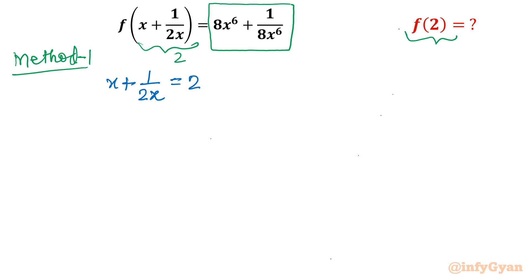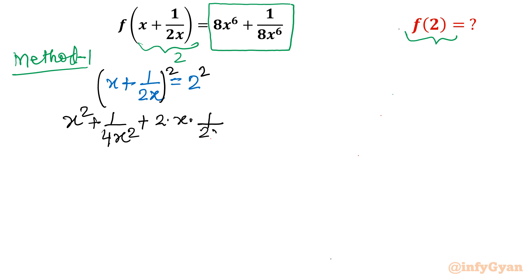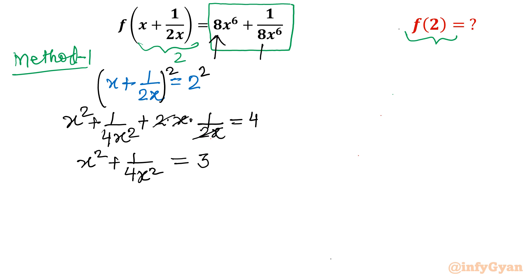Now I will square both sides. Using (a + b)² = a² + b² + 2ab, where a = x and b = 1/2x, the right hand side gives 2² = 4. The cross term 2·x·(1/2x) = 1 cancels, so we get x² + 1/4x² = 4 - 1 = 3.